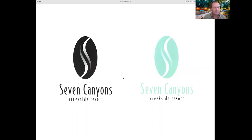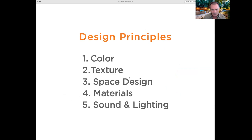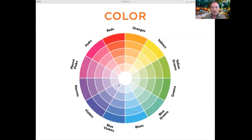Now we'll dive into how emotions affect design. Here is an abbreviated list of design principles I'll focus on: color, texture, space design, materials, sound, and lighting. These can be used for literally anything that is designed — a car, a phone, a house, a pillow, a chair. I'm a landscape designer, so I'll show you examples of how this plays out in my world.